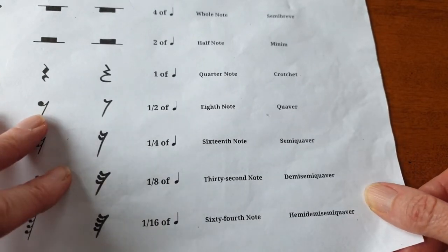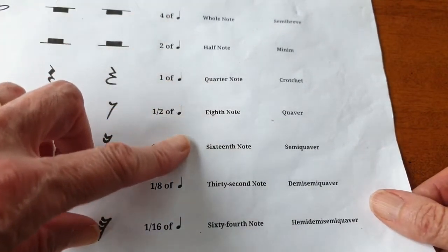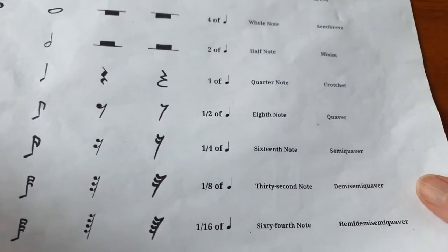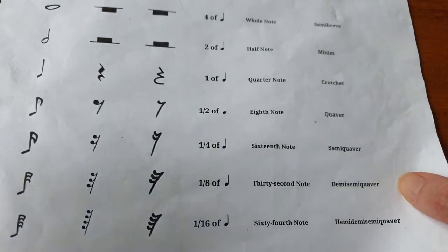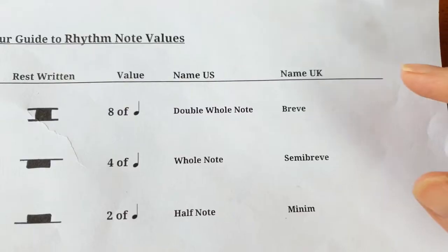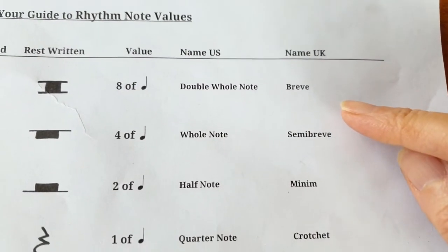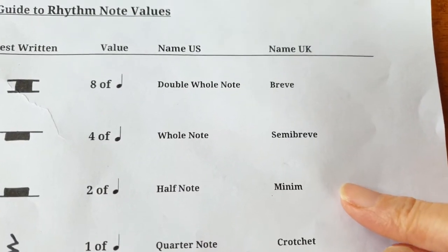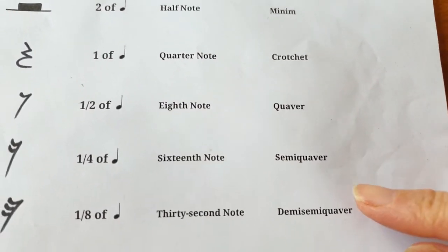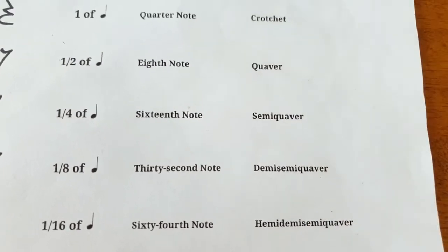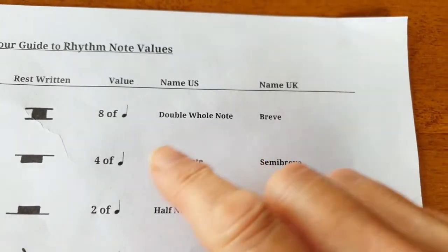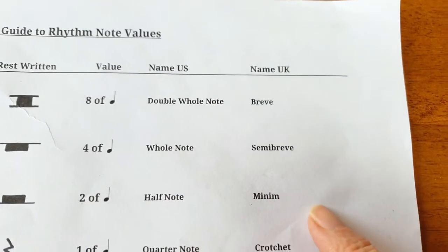Of course, if you go to another country that speaks another language, they have their own names for these note values. It's handy to know both systems, so you'll need to learn both versions of the English names for the note values.